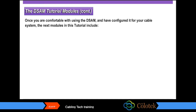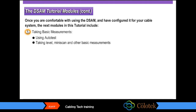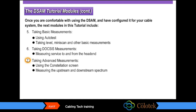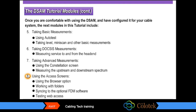Once you are comfortable with using the DSAM and have configured it for your cable system, the next modules include Module 5, Taking Basic Measurements — using Autotest, Level, Mini-Scan, and other basic measurements; Module 6, Taking DOCSIS Measurements — measuring service to and from the head end; Module 7, Taking Advanced Measurements — using the Constellation Screen and measuring upstream and downstream spectrum; and Module 8, Using the Access Screens — the Browser Option, Working with Folders, Syncing to optional FDM Software, and Testing Web Access.